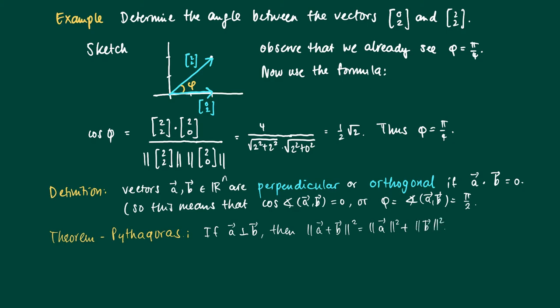Our proof is easy now. So the length of A plus B squared—now what we've seen before is the length of A squared. If you work this out using the inner product of A plus B with A plus B, then you get: the length of A squared plus two times the inner product of A with B plus the length of B squared.